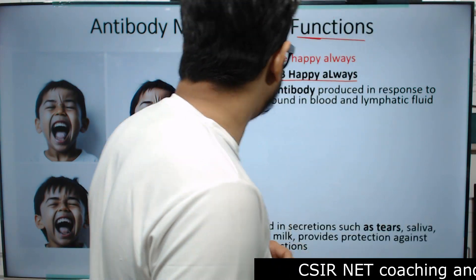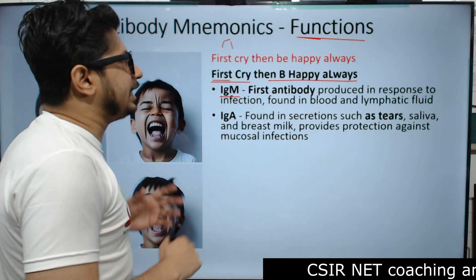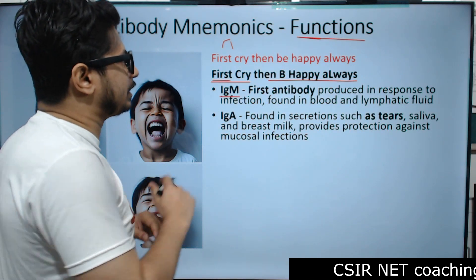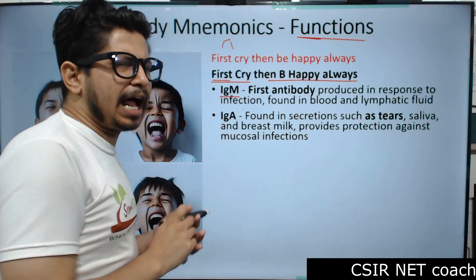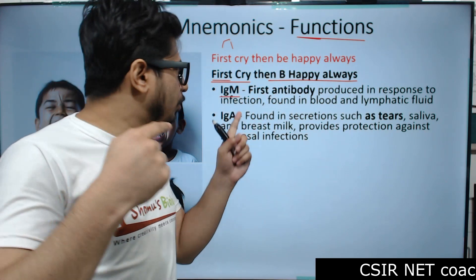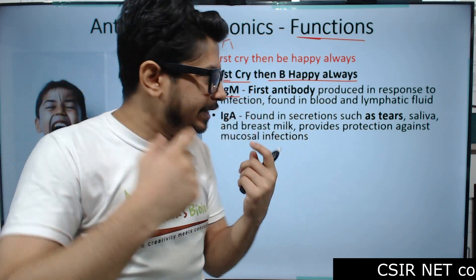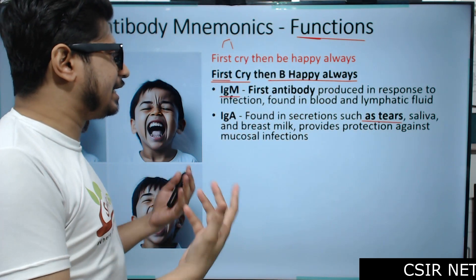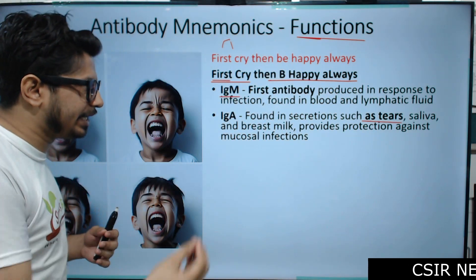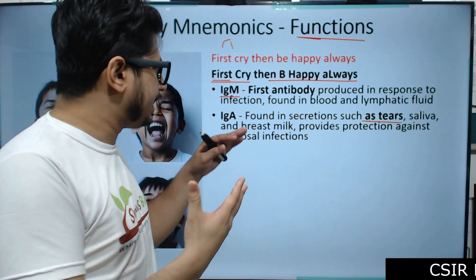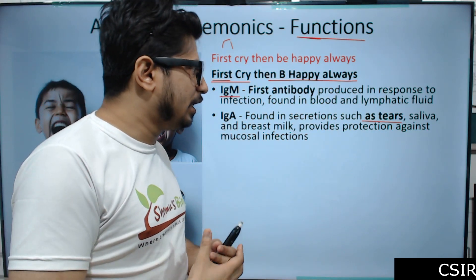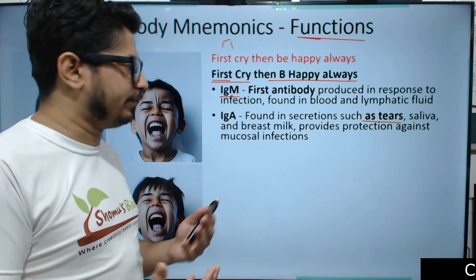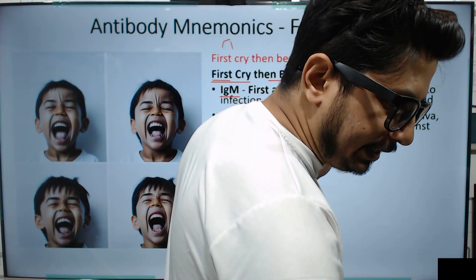Next in MAD EGG is A — IgA. 'Cry' corresponds to IgA: this antibody is present in our tears. IgA is a secretory antibody — it's found in tears and breast milk and provides protection against mucosal infections of the body.